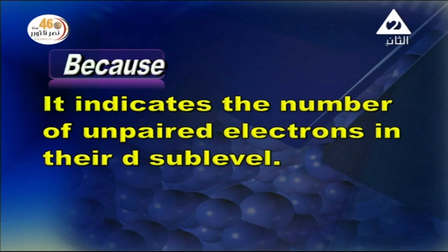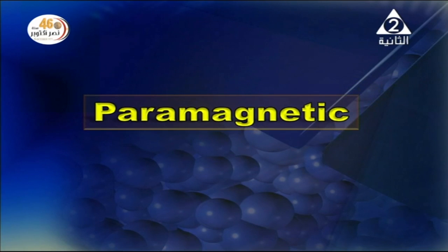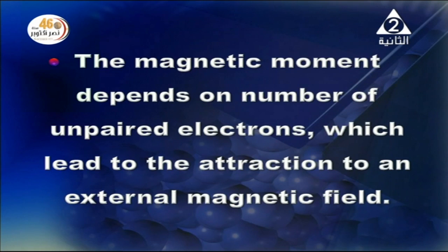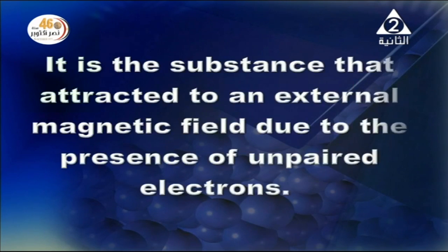The first type of magnetic property is paramagnetic. Paramagnetic properties appear in ions, atoms, or molecules in which their orbitals have unpaired electrons, and their magnetic moment depends on the number of unpaired electrons, leading to attraction to an external magnetic field. A paramagnetic substance is defined as a substance attracted to an external magnetic field due to the presence of unpaired electrons in the D sub-level.